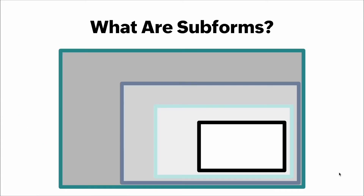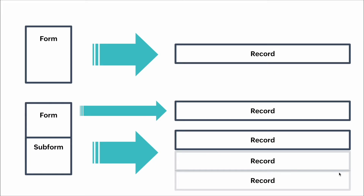So what are subforms? We have a diagram here on the screen of several rectangles nested within other rectangles, and this is to help identify subforms embedded within other forms. Here's another diagram: if you look on the top, you have a form pointing to its record. Forms contain records. Similarly, on the bottom, we have a form pointing to a record and together with it a subform pointing at multiple records on the right side.